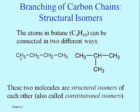If you look at butane the way I showed it, it's the four carbons in sequence, as you see on the left. But for four carbons and ten hydrogens there's another way to put them together so that the octet rule is satisfied — three carbons in sequence and then one branching off the middle carbon, as seen on the right. These two forms of butane are considered structural isomers — or constitutional isomers as your book calls them. The way they are put together is different even though they share the same molecular formula.